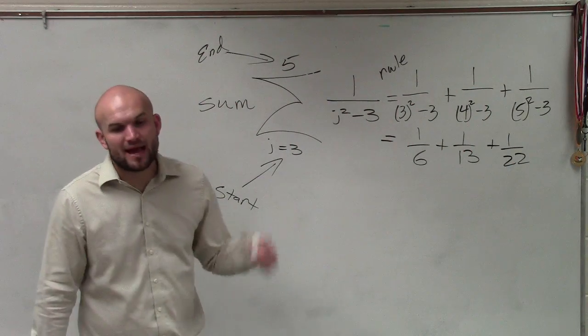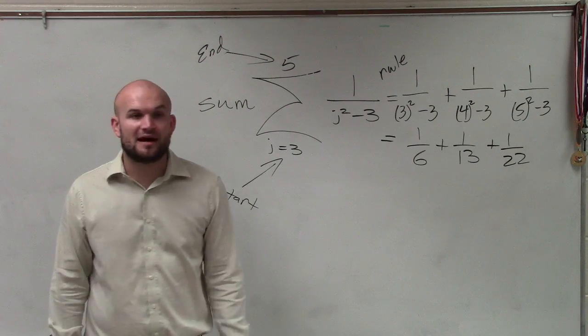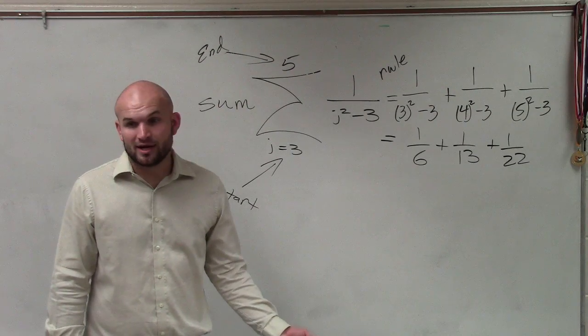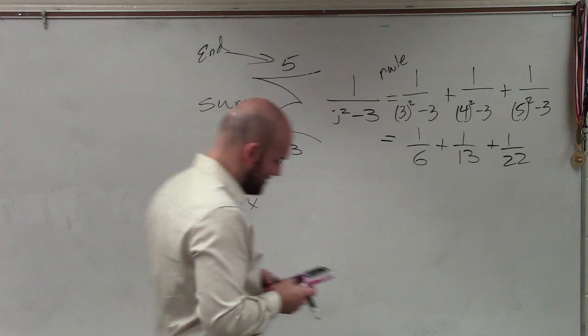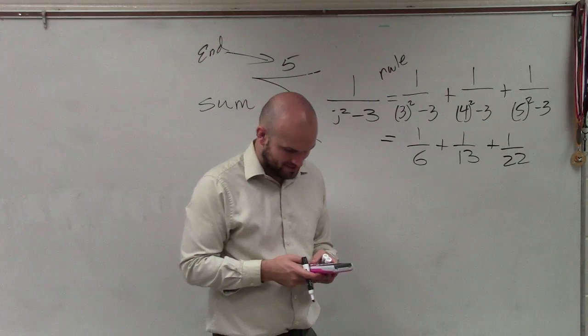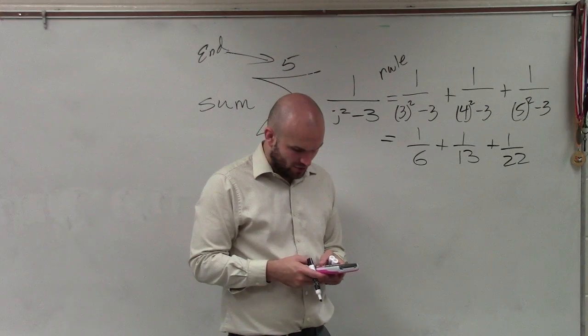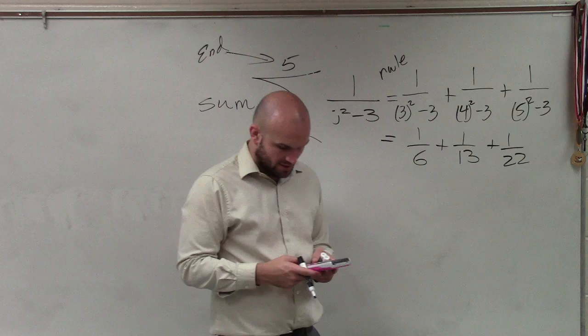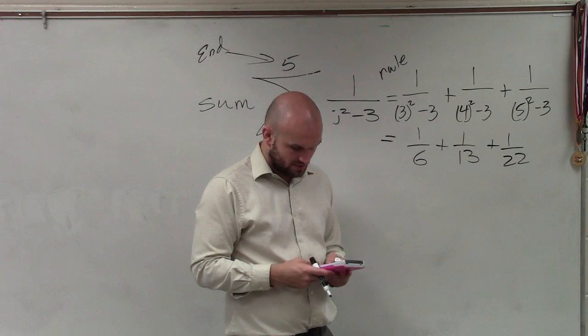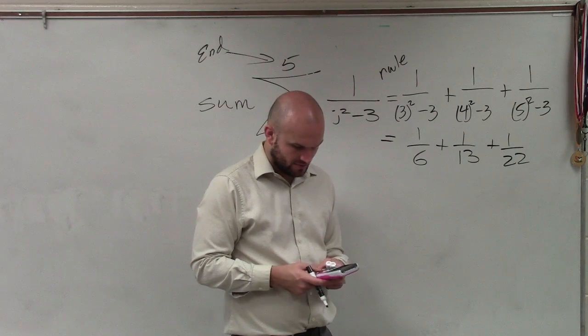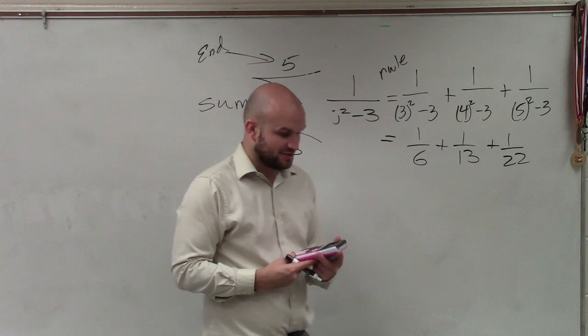And obviously to add these without a calculator, you would have to find the common denominator, right? But I am just going to default and use a calculator for this one, because I don't want to do all that math, to be honest with you. So 1 over 6 plus 1 over 13 plus 1 over 22.